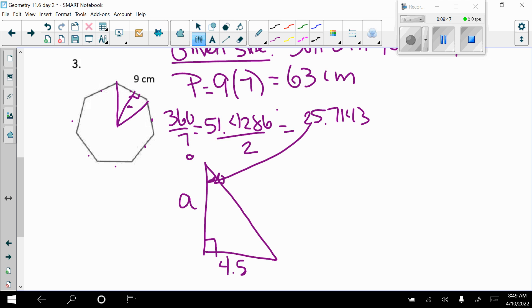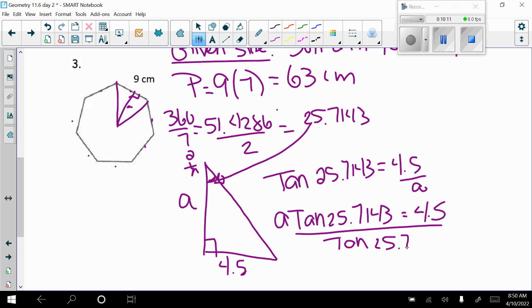So I need to find my apothem. So if I'm standing up here, I'm going to use the tangent. So I would say the tangent of 25.7143 is equal to 4.5 over A. So A times the tangent of 25.7143 equals 4.5. So divide by the tangent of that. And so I find out that my apothem is 4.5 divided by the tangent of 25.7143. My apothem is approximately 9.3443.